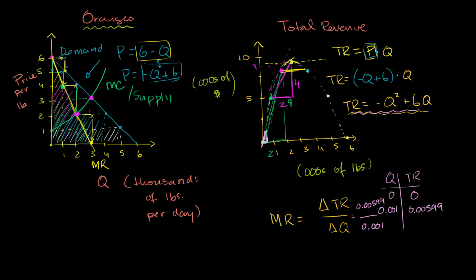The consumer surplus is the area above the price and below the demand curve. The producer surplus — what we're trying to optimize — is the larger area right over here. But there's a deadweight cost: the total surplus that society would have gotten under perfect competition is now being lost. Beyond just the deadweight loss, the monopoly has also shifted value away from consumers toward the producer, giving much more to the monopolist and much less to the consumer.